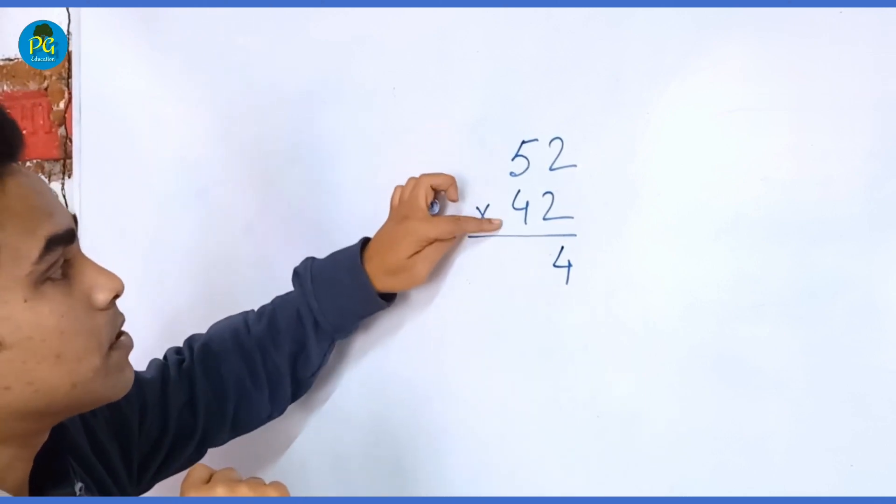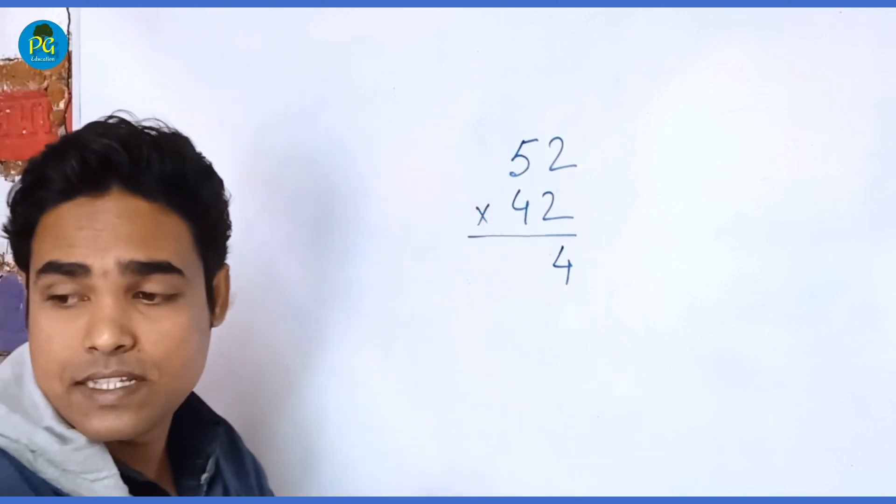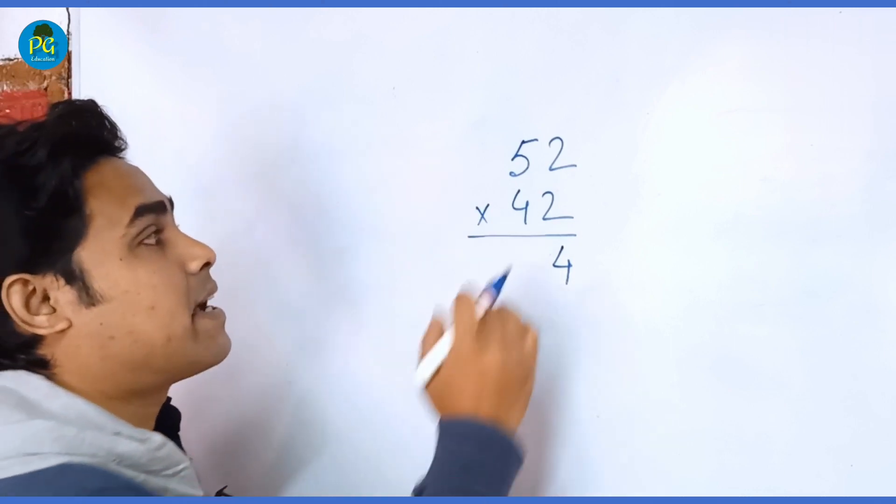Now we have to add these two numbers, 5 plus 4, how much it is? 9. Then multiply this 9 with this 2.